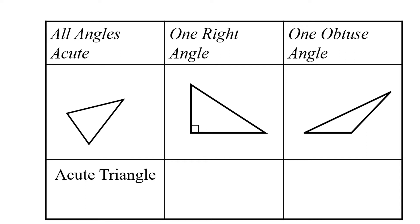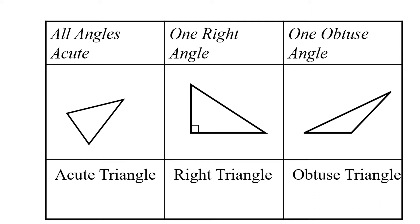If a triangle has one right angle in it — remember, a right angle is 90 degrees — then guess what it's called? A right triangle. And if a triangle has one obtuse angle — obtuse means an angle that's bigger than 90 degrees but less than 180 — it's called an obtuse triangle. So that's one way to categorize triangles.